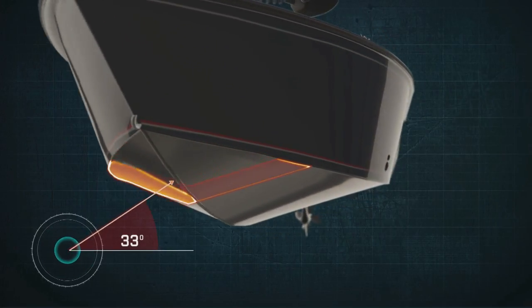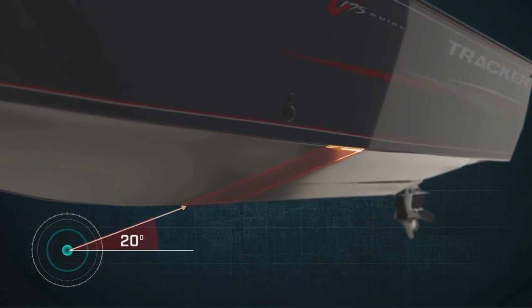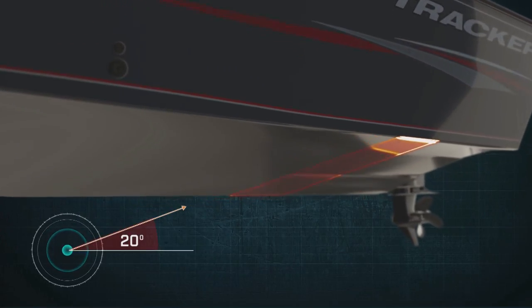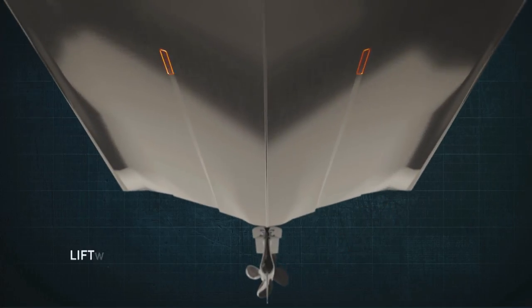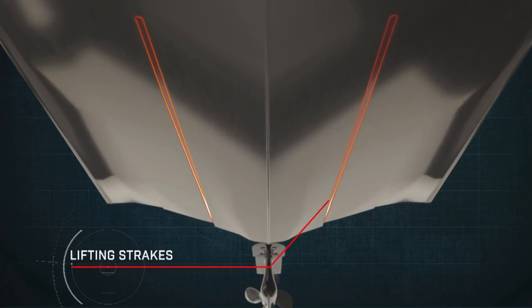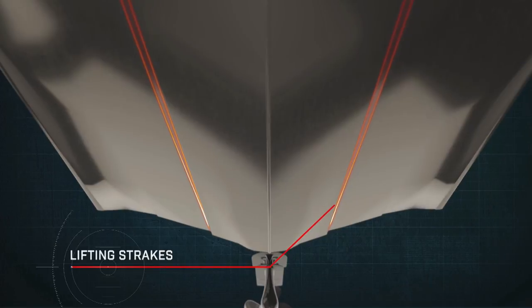Tapering to a 20-degree angle at the back, this makes the Tracker Deep V great in rough water but also highly stable. Lifting strakes are then added, helping the boat ride higher and making it faster and drier even in chop.